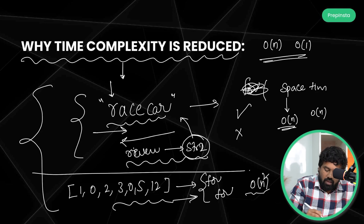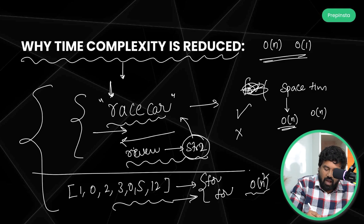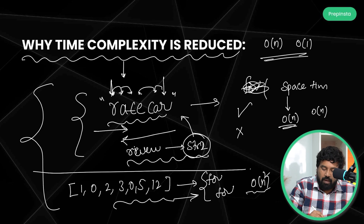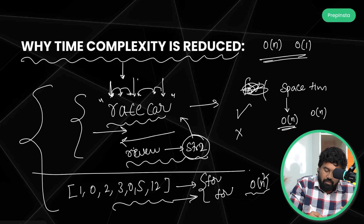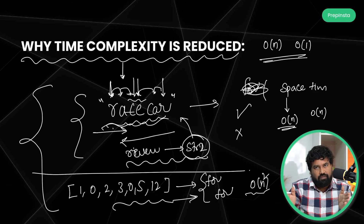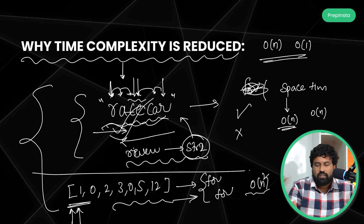Instead of nested loops, I'll use two pointers. One pointer starts at the left (index zero) and another at the right (end of the string). Whenever both characters are equal, I slowly increase the left pointer and decrease the right pointer. I keep comparing, and if all comparisons are correct and the pointers converge or cross each other, and all letters from the left side equal those from the right side, then it is a palindrome.